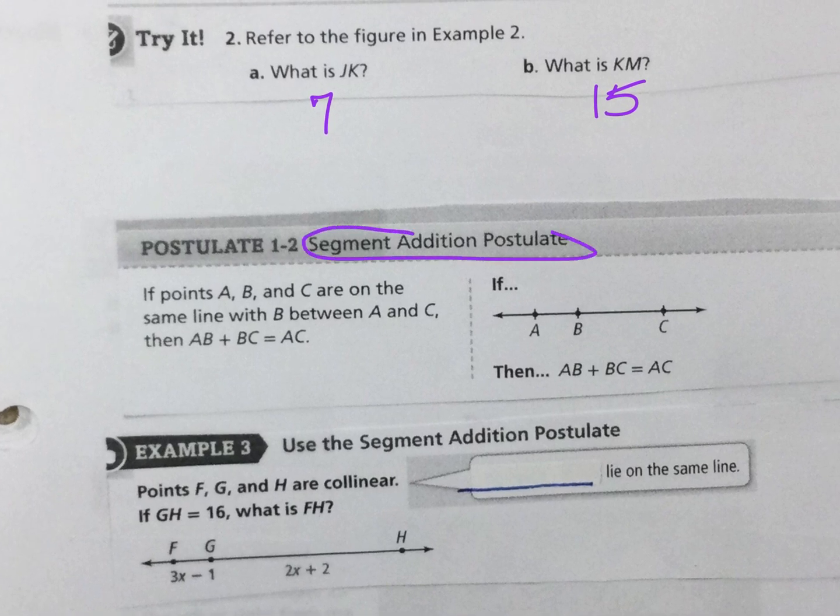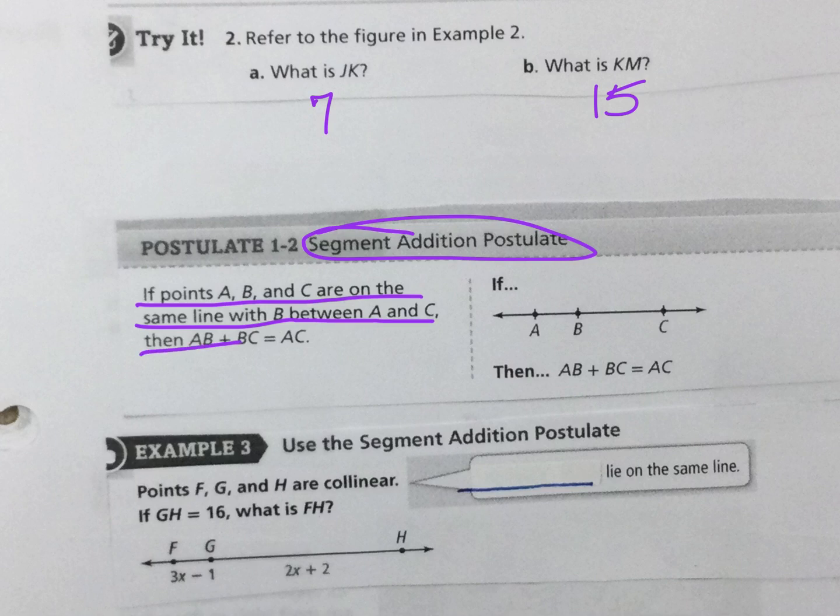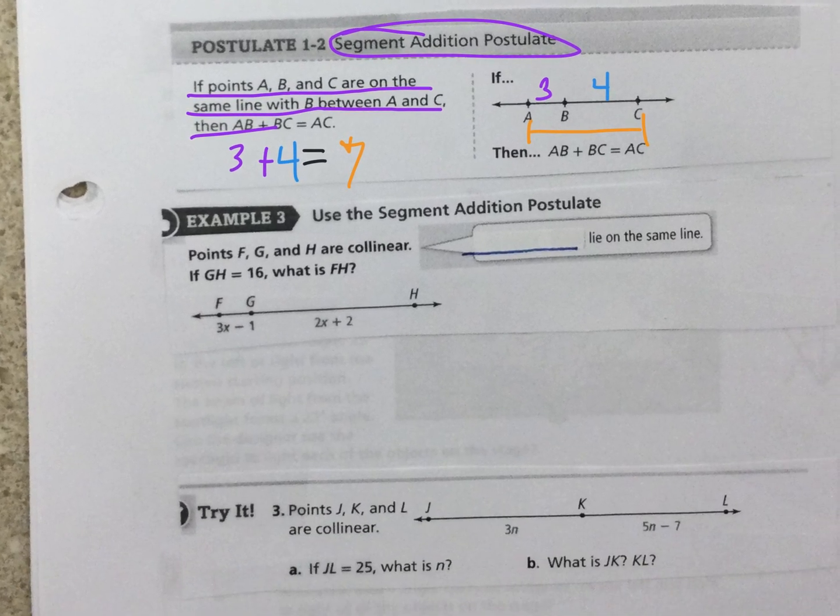So postulate, the segment addition postulate just says if points A, B, and C are on the same line with B in between, then AB plus BC equals AC. And that just makes sense, doesn't it? You add those two small pieces together and get the big piece.